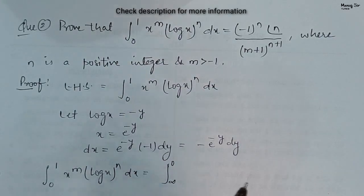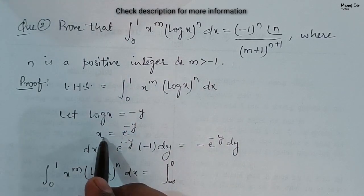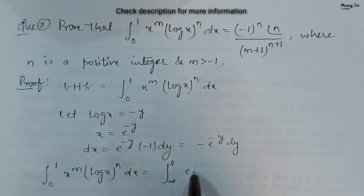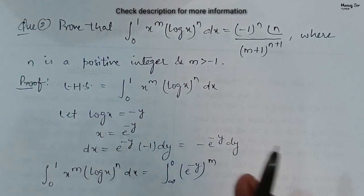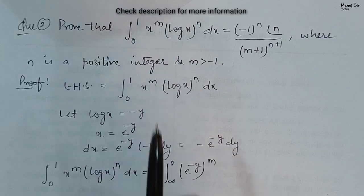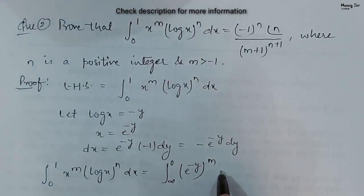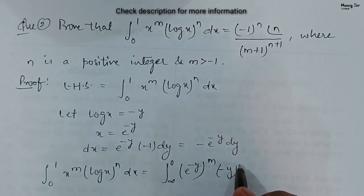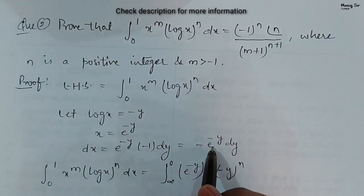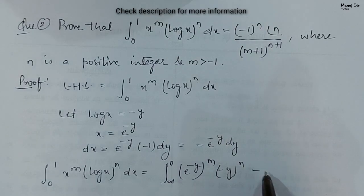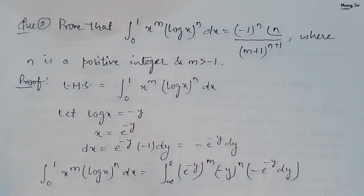Now substituting: x to the power m becomes e to the power (minus y times m); log x to the power n is (minus y) to the power n; and dx is minus e to the power minus y dy. So the integrand becomes e to the power (−my) times (−y)^n times (−e^(−y) dy), with limits from infinity to 0.